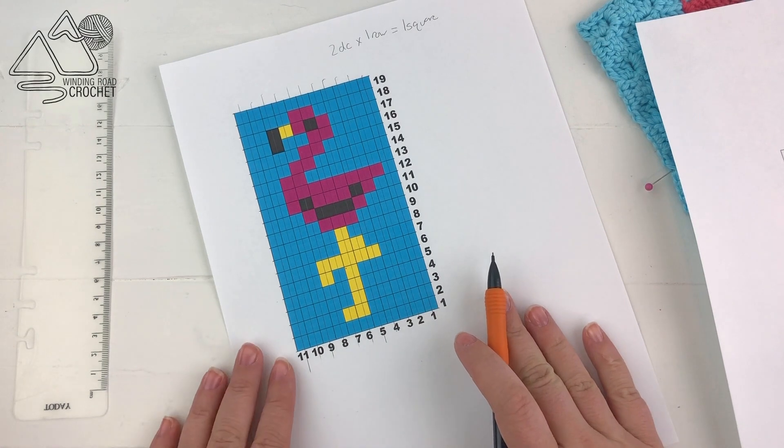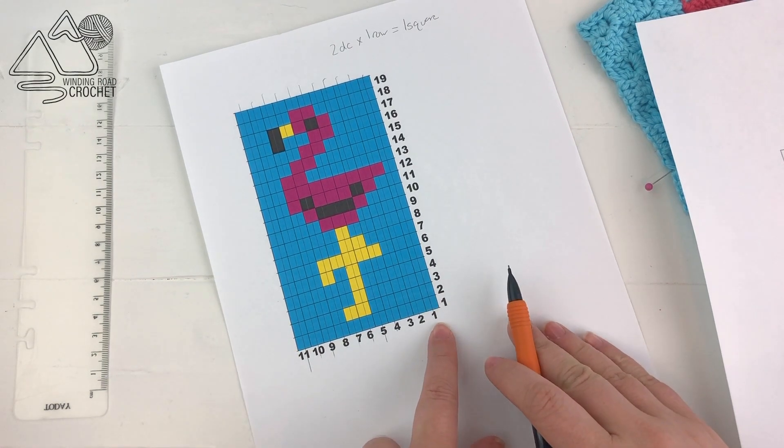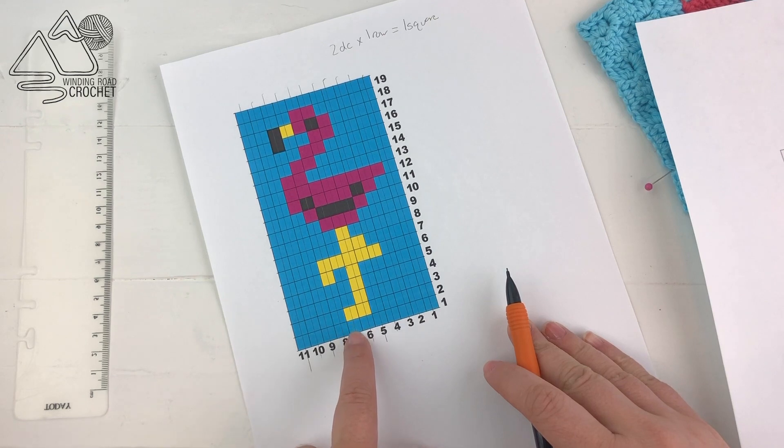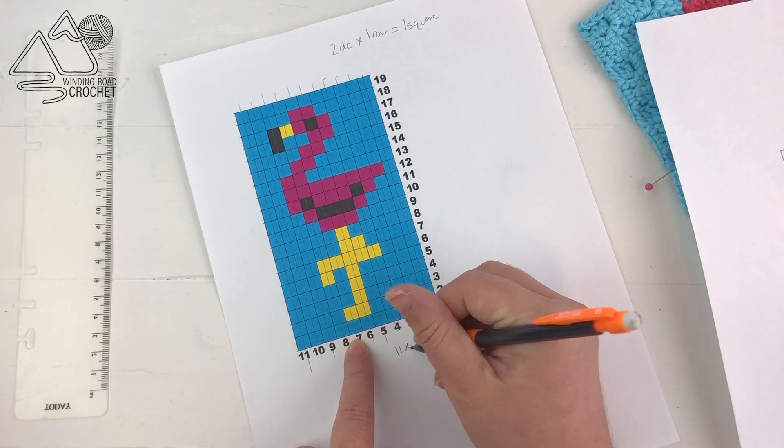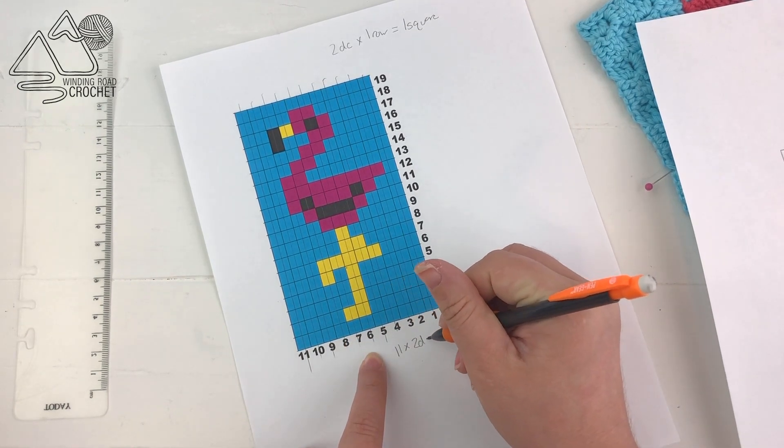So the first thing we will do is find out our starting chain. Now we have 11 squares along the bottom here, and we know that every square is going to have two double crochet. So we will take 11 times 2, and we know we need 22 double crochet for each row.